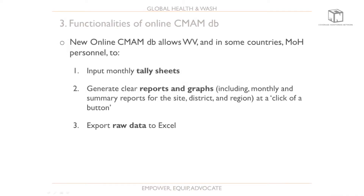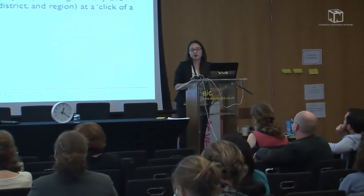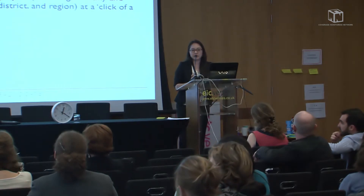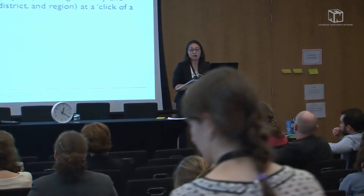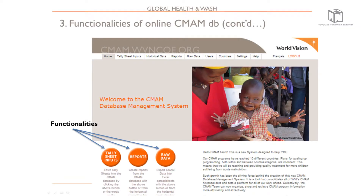The three main functionalities of our database are: to input monthly tally sheets, to generate summary reports and graphs automatically at the click of a button, and to export raw data into Microsoft Excel for further statistical analysis for operational research. For tally sheet input, we added a feature that flags suspiciously inaccurate data — a unique feature that helped improve data accuracy. This is what the homepage of our database looks like, with three buttons for the three main functionalities.